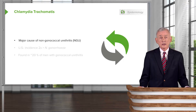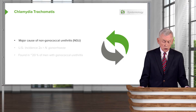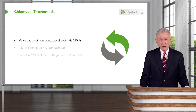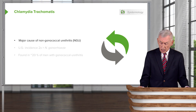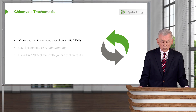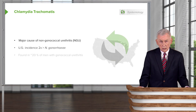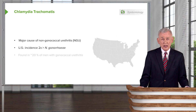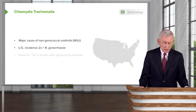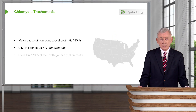The other infamous organism is Chlamydia trachomatis. It is the major cause of non-gonococcal urethritis. In the United States, the incidence is twice that of gonorrhea.